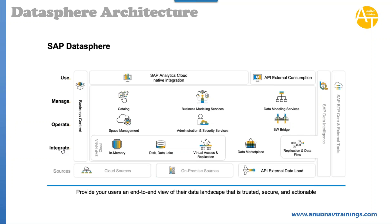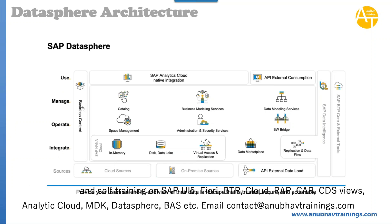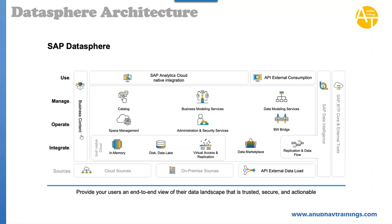Then you start with integration, operation, manage, and use. In the integration layer you can use existing business content offered by SAP and its partners. You have integration with an in-memory database called HANA Cloud, where you can use in-memory HANA Cloud capabilities including data lakes, virtual data access, and replication. You also have a data marketplace from where you can take data like currency exchange rates or other datasets available on the open market. You can also use replication flows and data flows to bring in data from your external SAP systems and SAP Data Intelligence.